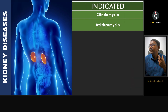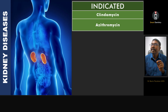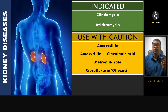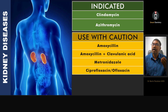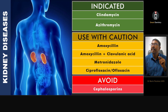Finally, for those having renal diseases, we can use clindamycin and azithromycin. We have seen that amoxicillin remains the drug of choice for most systemic illnesses, but not for kidney diseases — it can be used with caution at a low dose or under the supervision of a physician. Amoxicillin with clavulanic acid, metronidazole, ciprofloxacin, and ofloxacin must all be used with caution, and it is better to avoid cephalosporins.